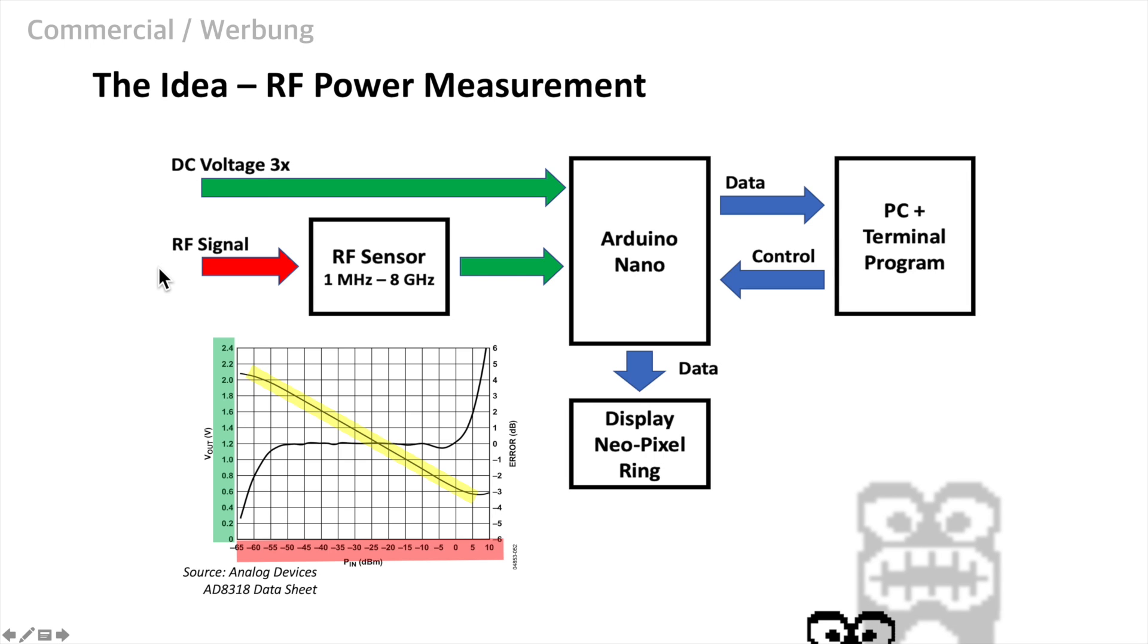We want to feed RF signals received by antennas or from RF cables into our device. It makes use of a logarithmic wideband RF sensor called AD8318 from Analog Devices which is producing a DC voltage which corresponds to the received RF power. The output DC voltage has a linear dependency on the RF signal power in dBm. I highlighted this in yellow in the given diagram. 2.1 volts corresponds to minus 60 dBm and 0.6 volt corresponds to plus 5 dBm.